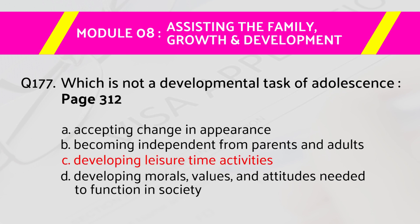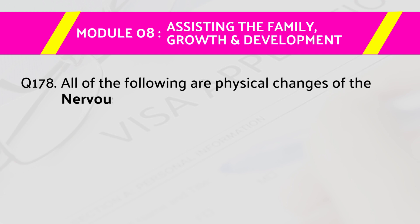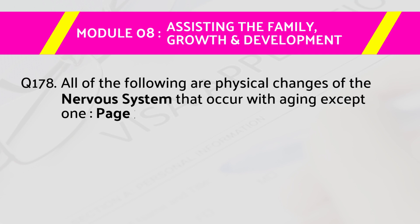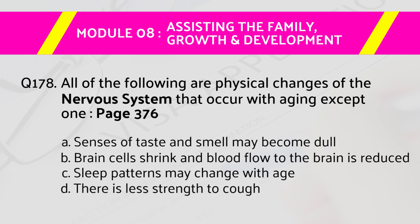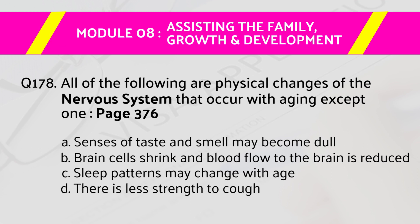Question number 178: All of the following are physical changes of the nervous system that occur with aging except one — page number 376. Answers are: A) senses of taste and smell may become dull, B) brain cells shrink and blood flow to the brain is reduced, C) sleep patterns may change with age, D) there is less strength to cough. The right answer is D, there is less strength to cough.